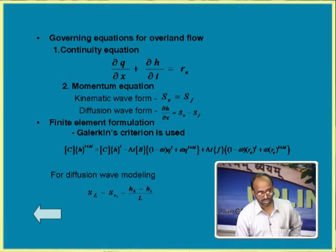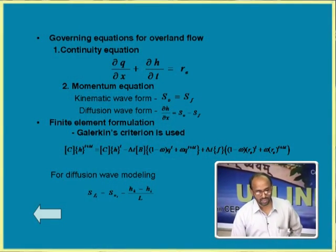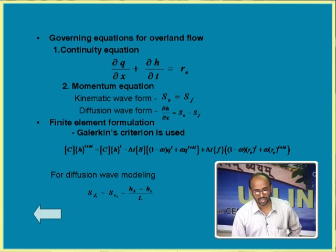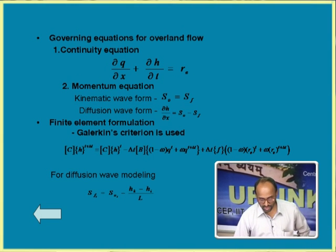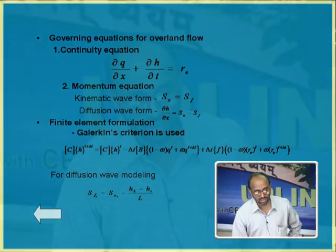We used two types of infiltration model. The other important component is the overland flow. As mentioned, two types of model are used: the kinematic wave model and the diffusion wave model. The continuity equation is the same for both, and here we use a one-dimensional model. The continuity equation is: ∂q/∂x + ∂h/∂t = re, where re is the effective rainfall, h is the flow depth, t is time, and q is the flow rate per unit width. This is the continuity equation. The simplified momentum equation — the Saint-Venant equation — is simplified two ways: kinematic wave where S₀ = Sf (bed slope equals energy slope), and diffusion wave where ∂h/∂x = S₀ − Sf.